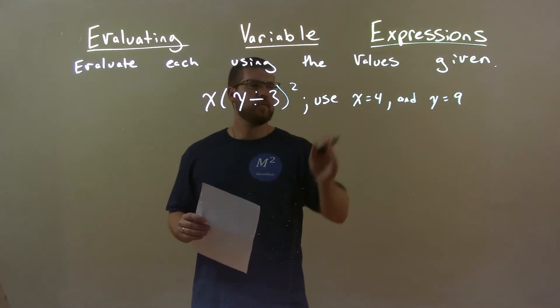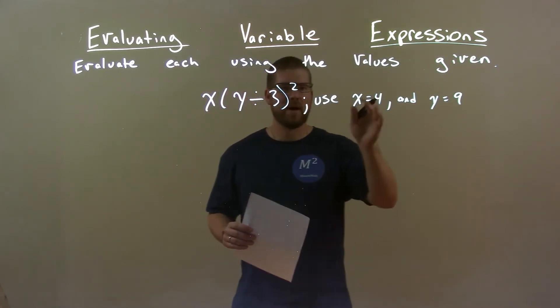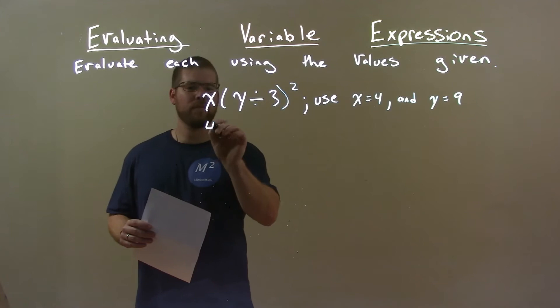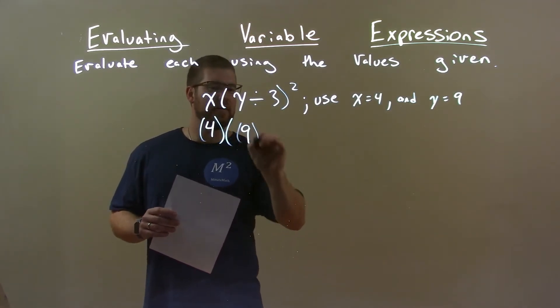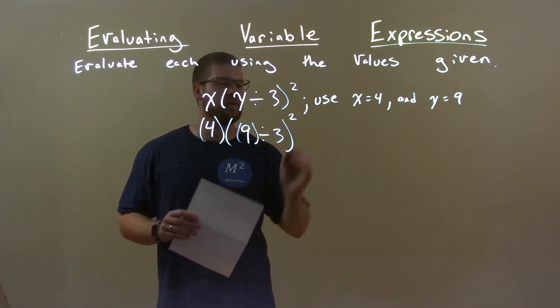So, first step, substitute variables with their corresponding values. x is 4, and y is 9. 9 divided by 3, and that's all squared.